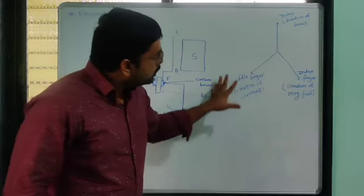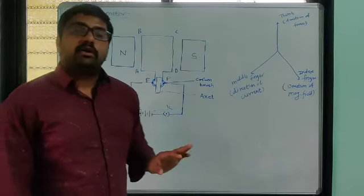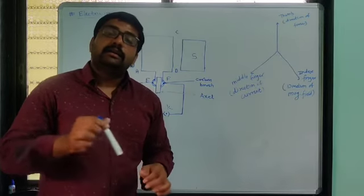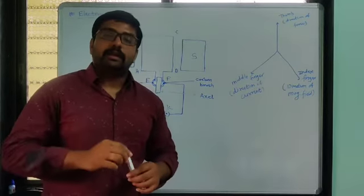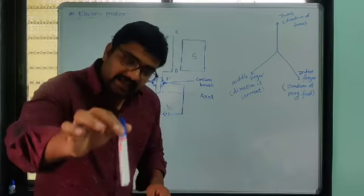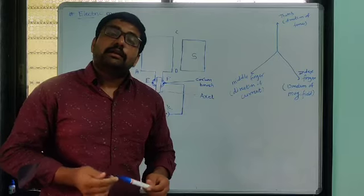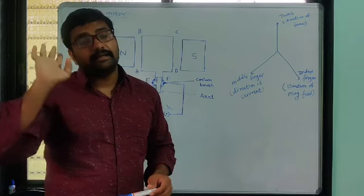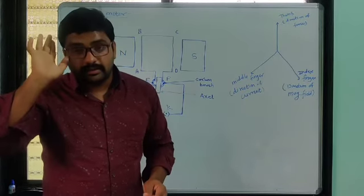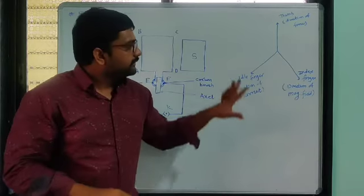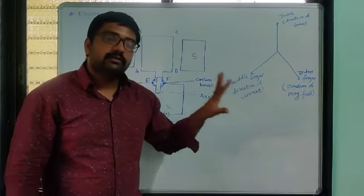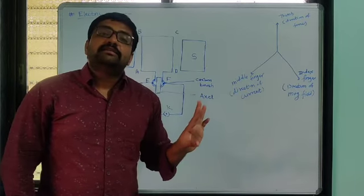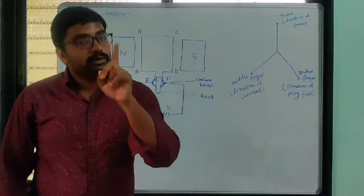Our middle finger is in the direction of the current. At that time, the thumb will denote the direction of the force which acts on an electric conductor when we place it in a magnetic field. The whole rule is based on the fact that when we place an electric conductor in a magnetic field and pass current through it, force will act on that conductor — that thing you have to remember.